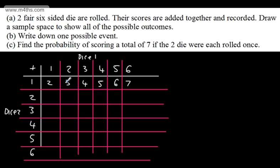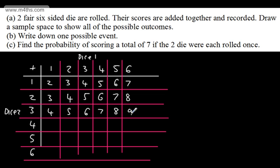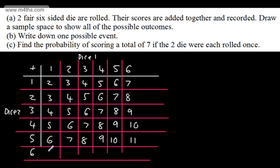Continuing along the next row: 1+2=3, 2+2=4, 3+2=5, and we can see this increases by one each time. The next rows give: 4, 5, 6, 7, 8, 9; then 5, 6, 7, 8, 9, 10; then 6, 7, 8, 9, 10, 11; and finally 7, 8, 9, 10, 11, 12. This gives us the complete sample space.